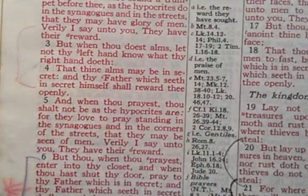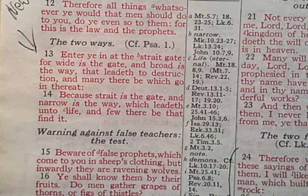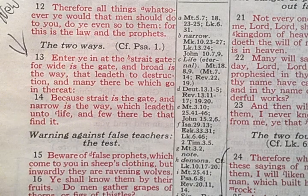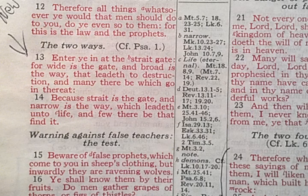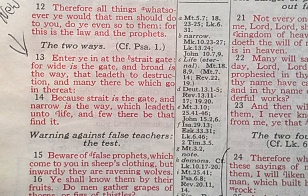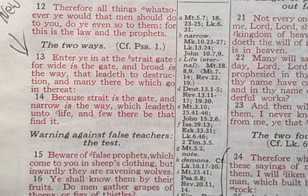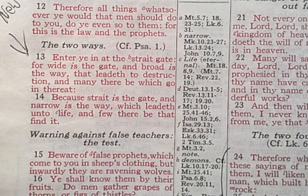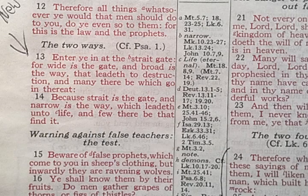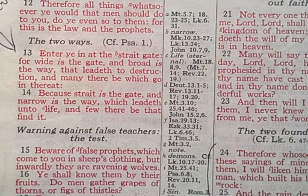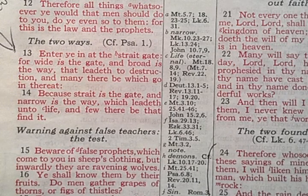This is Matthew chapter 7, verse 13: 'Enter ye in at the strait gate, for wide is the gate and broad is the way that leadeth to destruction, and many there be which go in thereat. Because strait is the gate and narrow is the way which leadeth unto life, and few there be that find it.' Broad is the way that leadeth to destruction — the Broadway — Apollyon.